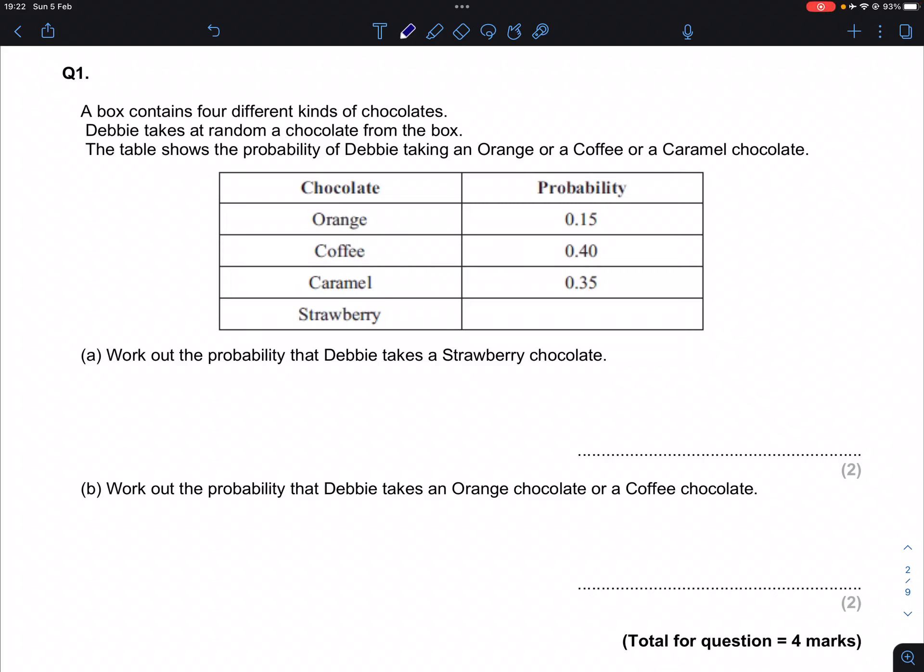Question 1. The box contains four different kinds of chocolates and the table here represents the probability of selecting each of the following chocolates: Orange, coffee, caramel, and strawberry.